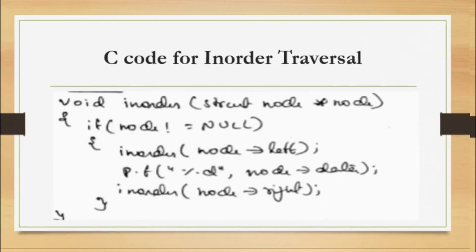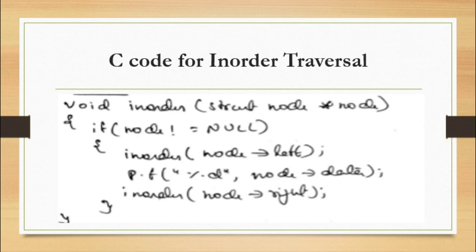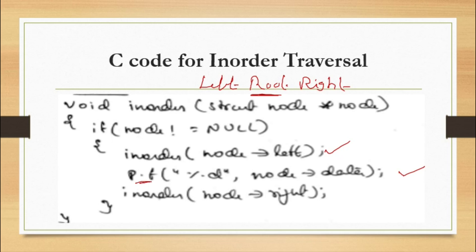In in-order traversal, it is the left subtree first, followed by the root in the middle, then the right. Wherever the root position comes, we print. So first we call inorder on the left subtree, then printf %d node->data to print the root, then call inorder on the right subtree. This is the C code for in-order traversal.